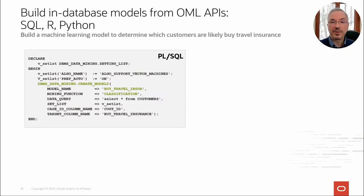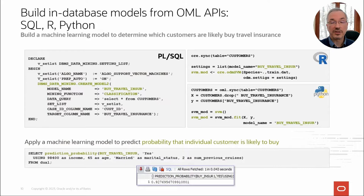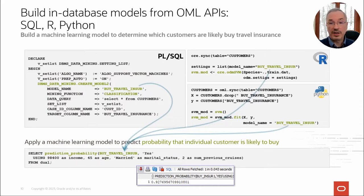Here's an example using OML for SQL to build a model to predict if customers are likely to buy travel insurance, using the PL/SQL procedure Create Model 2 and our customers database table. This produces a model in your user schema. You can build that same in-database model using R and Python functions from OML for R and OML for Py. As a quick preview, we can score individual customers using the prediction probability operator in a SQL query, using the model name — and this query could be invoked from ODBC, JDBC, Oracle APEX, or any other interface that enables SQL access.